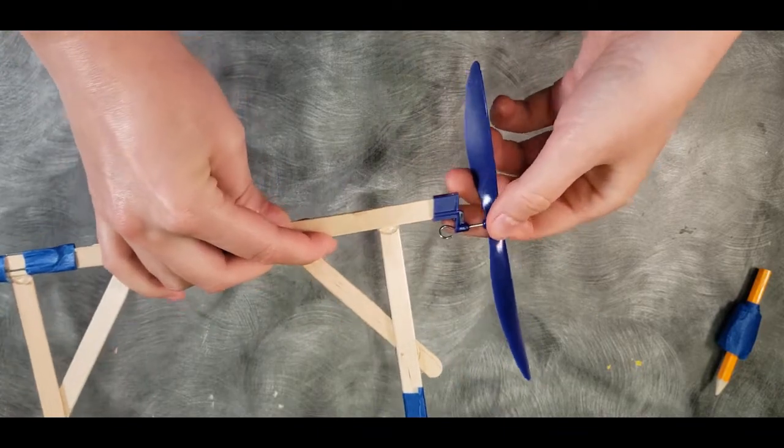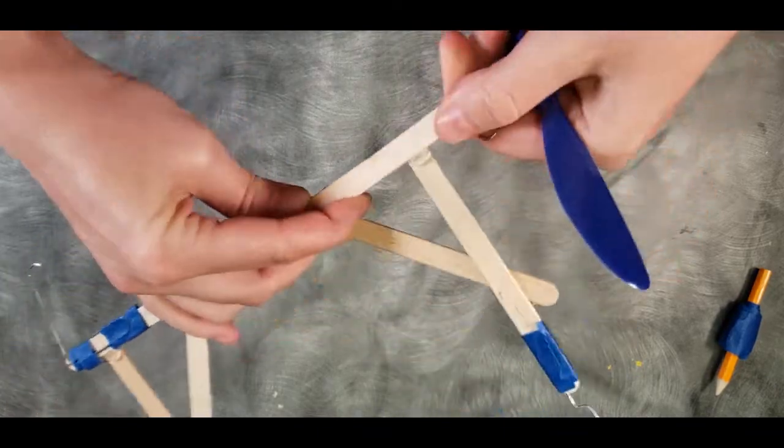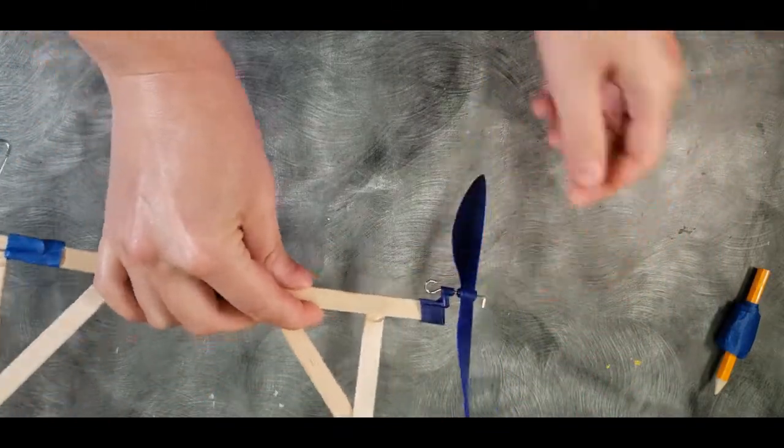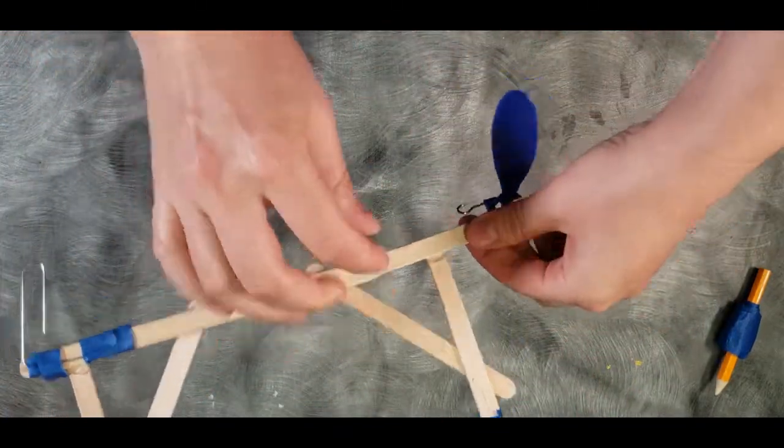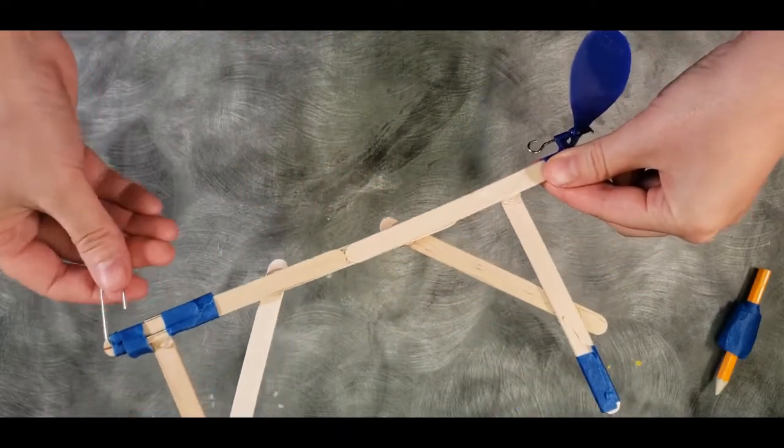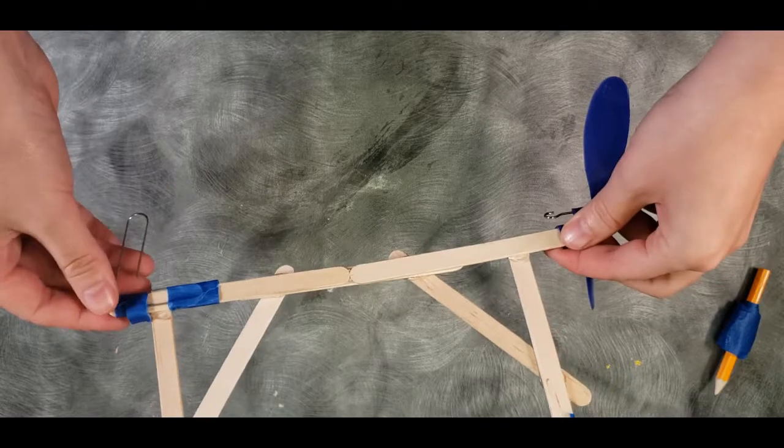Your propeller will fit on the other end, but not this way. This way. So that the hook is on the bottom, and you can string your rubber bands from the hook over here to the hook you've made from a paperclip over here.